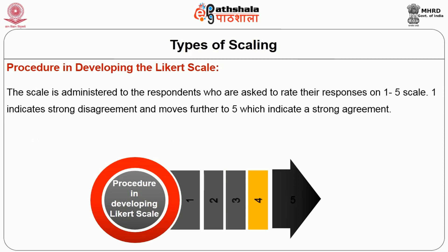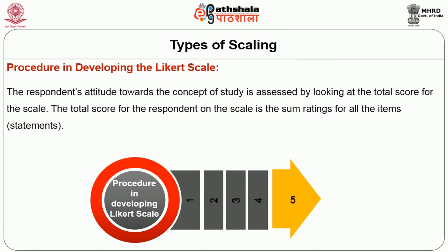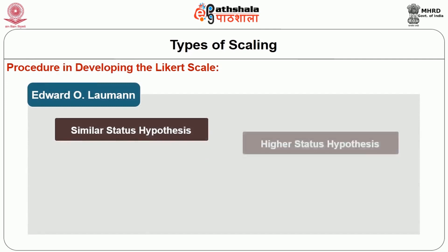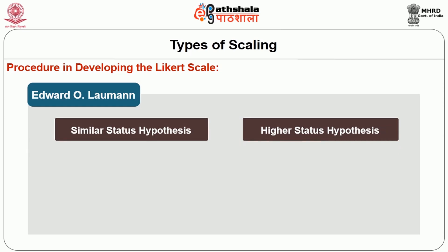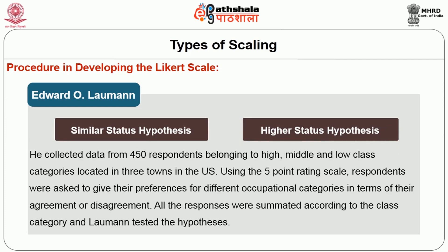The scale is administered to respondents who rate their responses on a 1 to 5 scale — 1 indicating strong disagreement and 5 indicating strong agreement. The respondent's attitude is assessed by looking at the total score for the scale, which is the sum of ratings for all items. Using the Likert scale, Edward O. Lawman attempted to test similar status and higher status hypotheses in his study. He collected data from 450 respondents belonging to high, middle, and low class categories in 3 towns in the US in 1965. Respondents were asked to give their preferences for different occupational categories, and all responses were summated according to class category to test the two hypotheses.